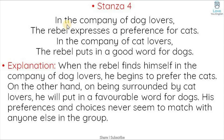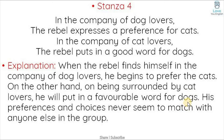Stanza 4: 'In the company of dog lovers, the rebel expresses a preference for cats. In the company of cat lovers, the rebel puts in good words for dogs.' Explanation: When surrounded by dog lovers, he begins to prefer cats. On being surrounded by cat lovers, he will put in favorable words for dogs. His preferences and choices never seem to match with anyone else in the group.